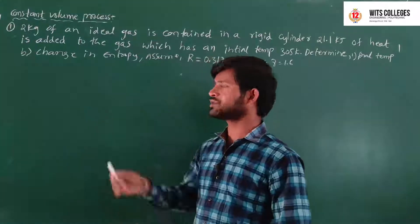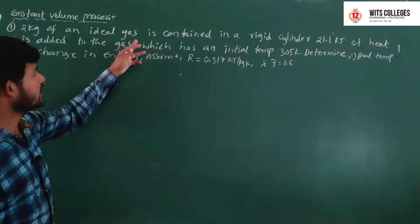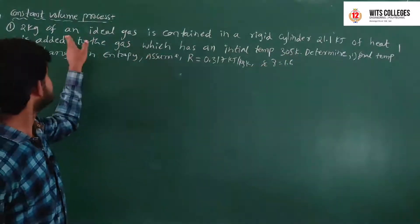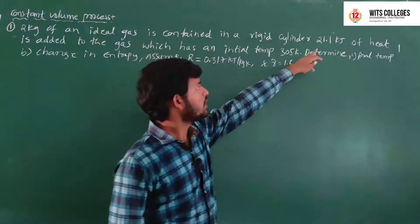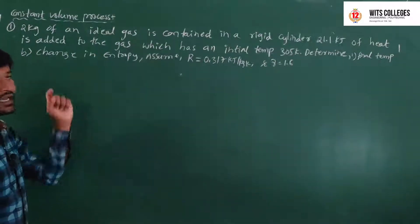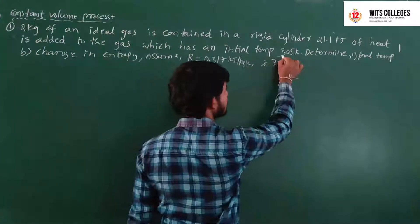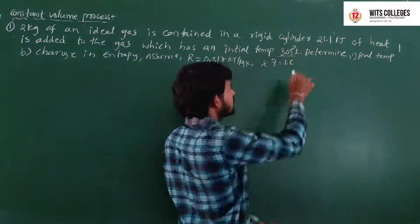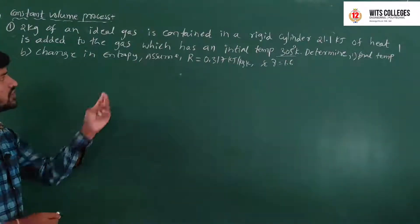First of all, we take the constant volume process. We have taken one problem: 2 kg of an ideal gas is contained in a rigid cylinder. 21.1 kJ of heat is added to the gas, which has an initial temperature of 305 degrees Kelvin. Determine: first, the final temperature; second, the change in entropy.